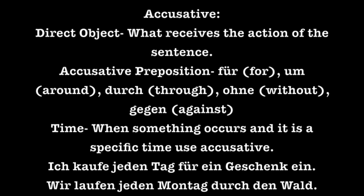In the accusative case, we have direct objects. The direct object is what is receiving the action of the sentence. The accusative prepositions would be für, which means for; um, around; durch, through; ohne, without; and gegen, against.